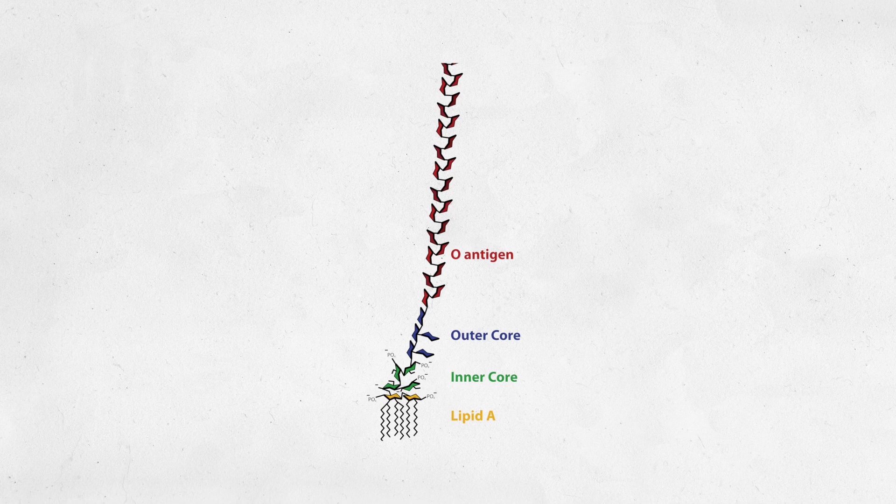Its structure is composed of lipids and sugar complexes, and this structure is also called the lipopolysaccharide, which is a vital component for gram-negative bacteria to maintain their cell wall integrity. Endotoxins consist of three parts: the O antigen, the core oligosaccharide, and the lipid A.